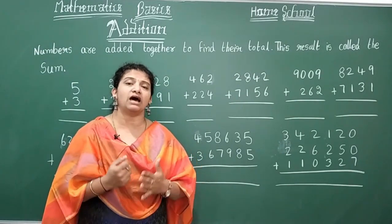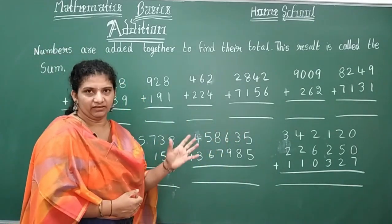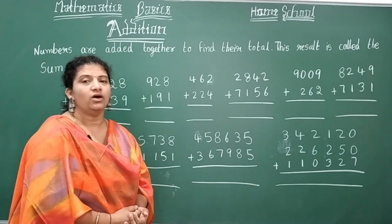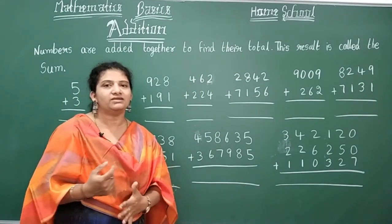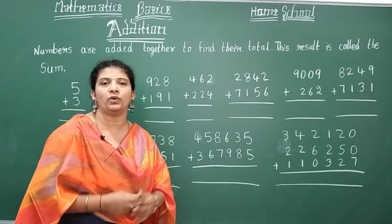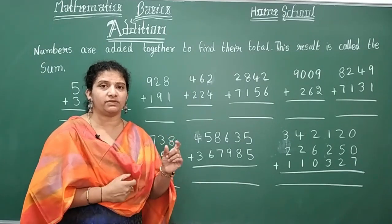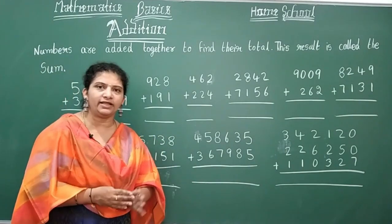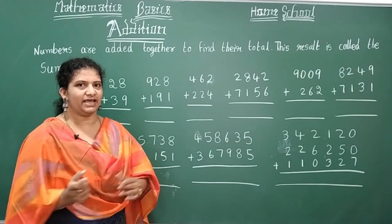What is addition? Numbers are added together to find their total. This result is called the sum. The process we do is called addition, and what we get is the sum. We use a plus symbol to add any two numbers. You have seen this in positive and negative numbers — positive is represented by plus, negative by minus. If you already know this addition process, pause the video, do all the answers, then compare.